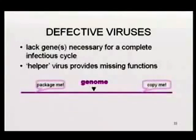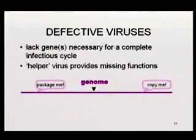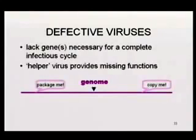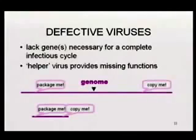These defective viruses can actually be incredibly defective. In order to get their genome copied, they need some kind of signal on the genome that says 'copy me' and some kind of signal that says 'package me', so that the genome gets incorporated into new virus particles. Potentially all the other coding regions could be deleted and those functions provided by the helper virus, because those are all things that can diffuse around the cell. The only things that have to be part of the genome are these 'copy me' and 'package me' signals, so you can get a really tiny little virus particle. Some defective particles may just lose one gene or so.